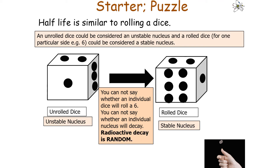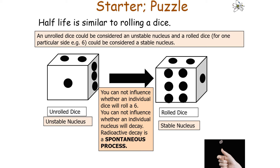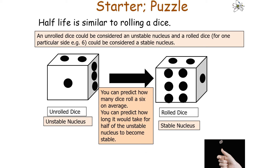As a result, radioactive decay is random — you can't influence whether an individual dice will roll a 6, and you can't influence whether an individual nucleus will decay. Radioactive decay is also a spontaneous process. However, you can predict how many dice roll a 6 on average, and by that logic, you can predict how long it would take for half of the unstable nuclei in a sample to become stable.